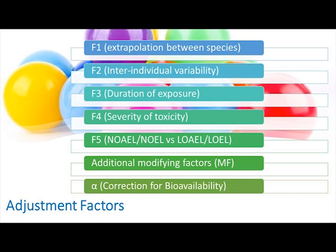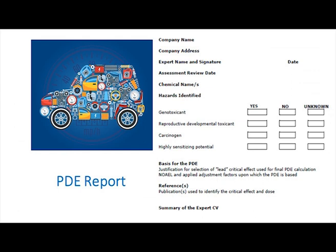Next, we will see what the adjustment factors are — we will be explaining in detail about adjustment factors in our future modules. F1 stands for extrapolation between species. F2 stands for inter-individual variability. F3 stands for duration of exposure. F4 stands for severity of toxicity. F5 stands for NOAEL, NOEL, ATLOAEL, or LOEL. MF stands for additional modifying factor. Alpha (α) is a factor for correction for bioavailability.